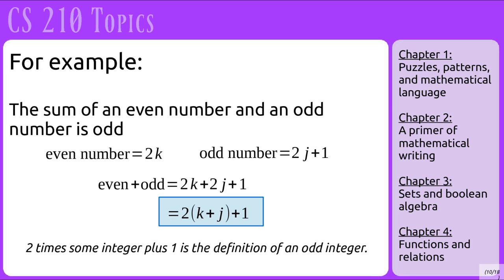For an example of a simple proof, let's say we want to prove that the sum of an even number and an odd number is odd. We'll define an even number as 2k, or 2 times some integer. We'll define an odd number as 2 times j plus 1, another definition for odd integer. Then we will add them and simplify, and it should come out to the definition of another odd integer.